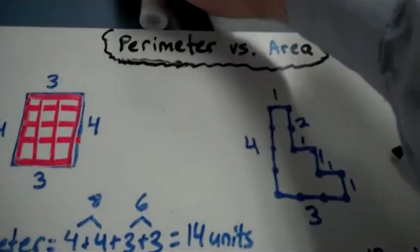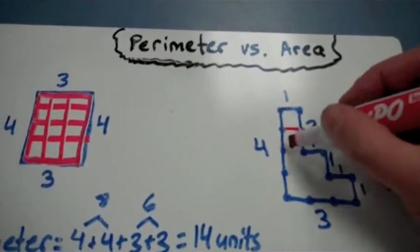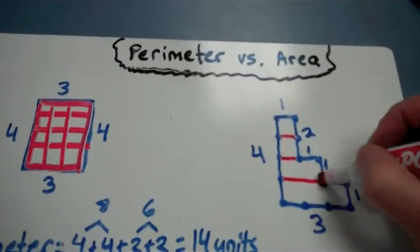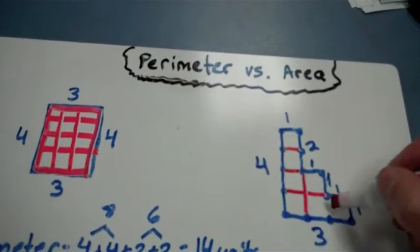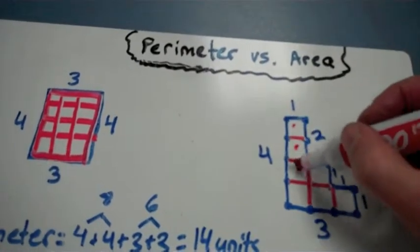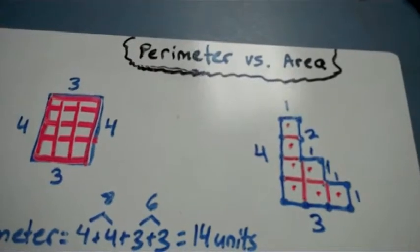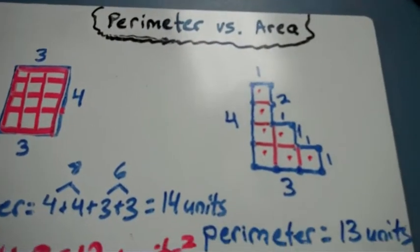Now I'll get the area. Again, the area is the space inside of a shape. So I'm going to draw my unit squares. And I'll just count them: 1, 2, 3, 4, 5, 6, 7. 7 square units.